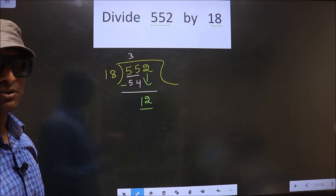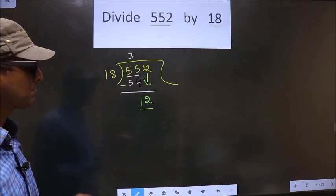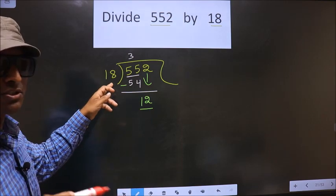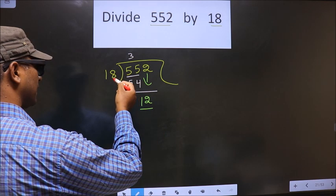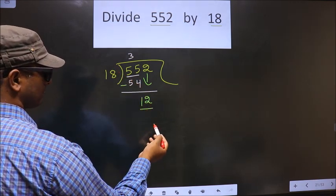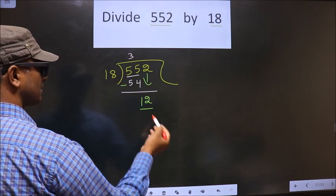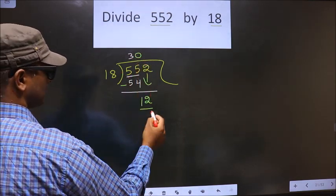You are not supposed to do that. Instead, what you should think of is, to this number, what should you multiply to get a number here? If we multiply by 1, we get 18. 18 is larger than 12. So what we do is we multiply by 0. So 18 into 0 is 0.